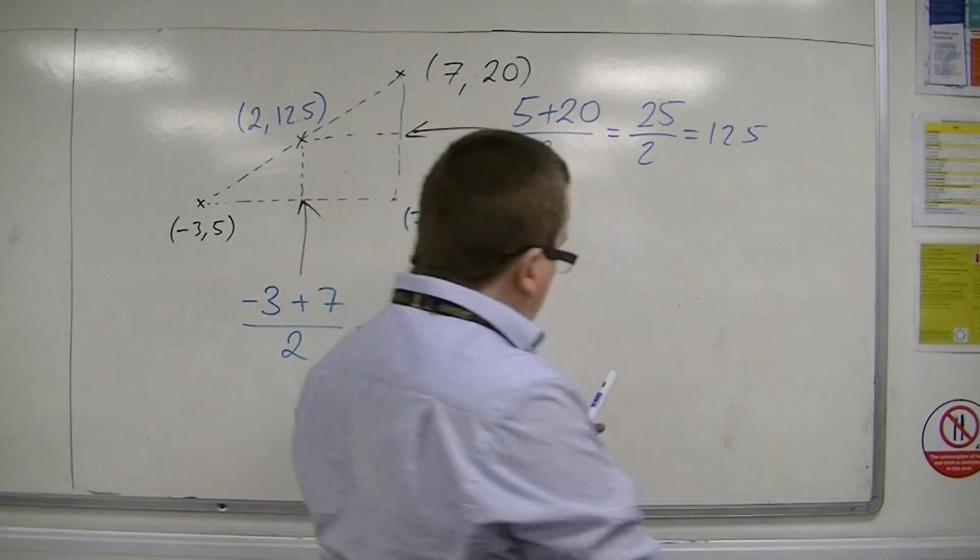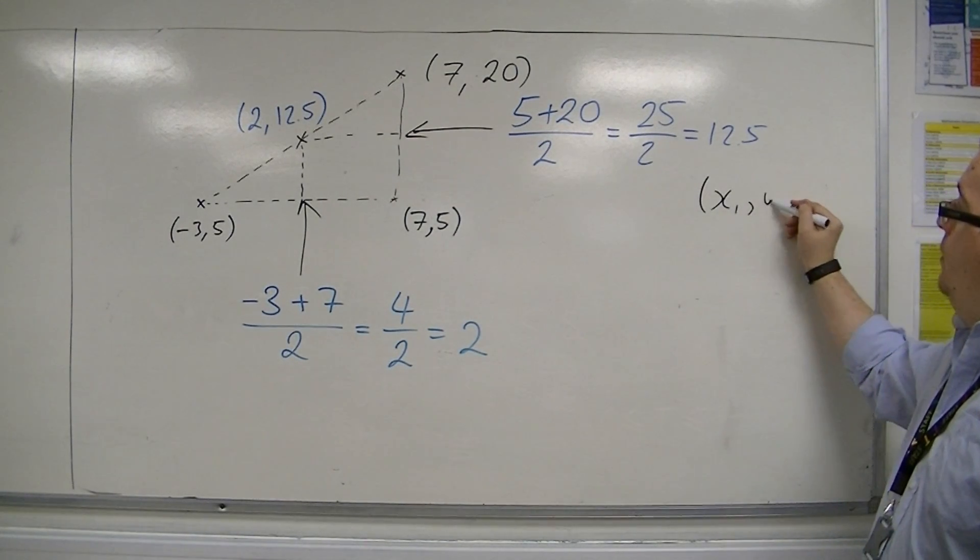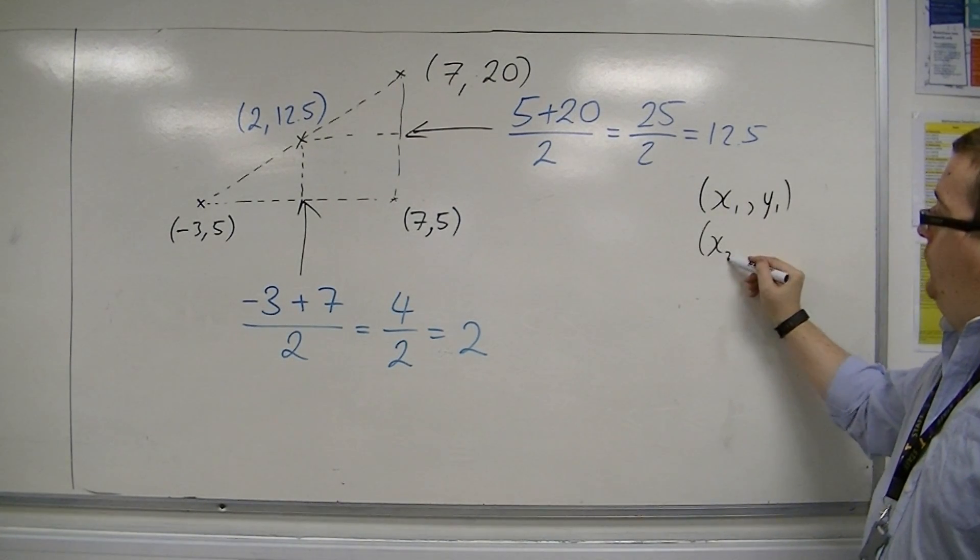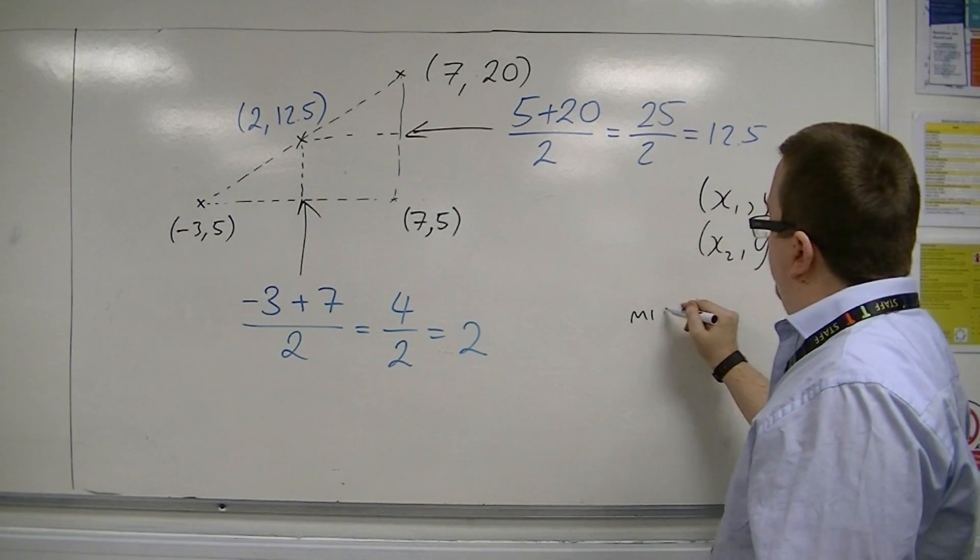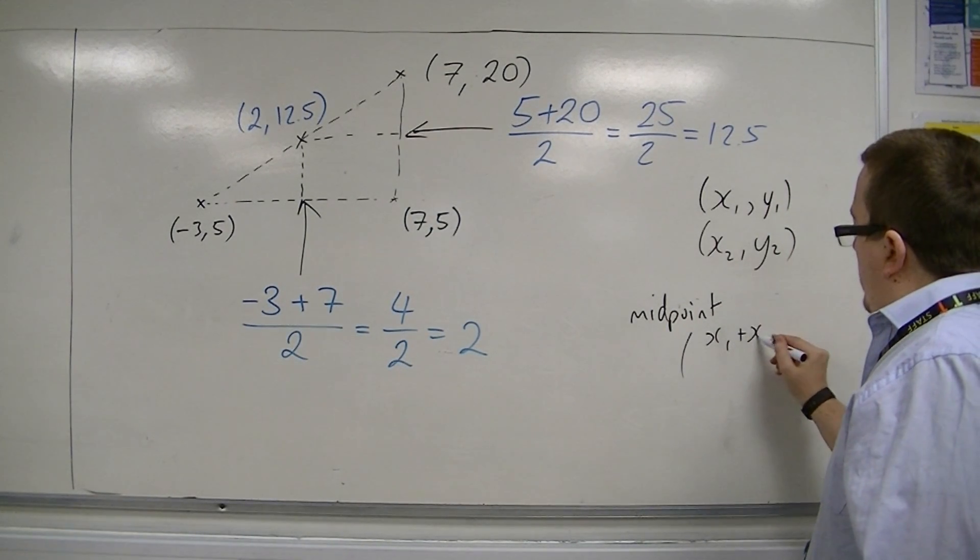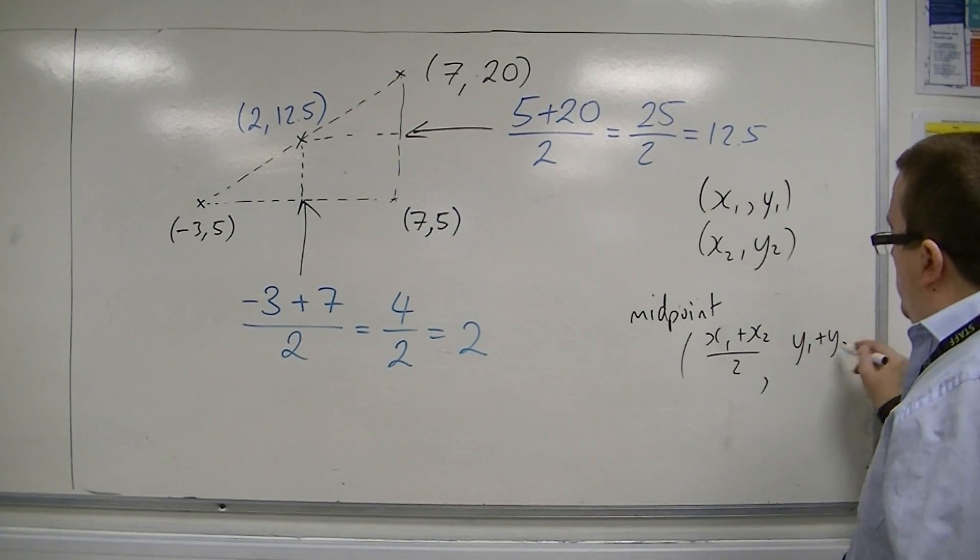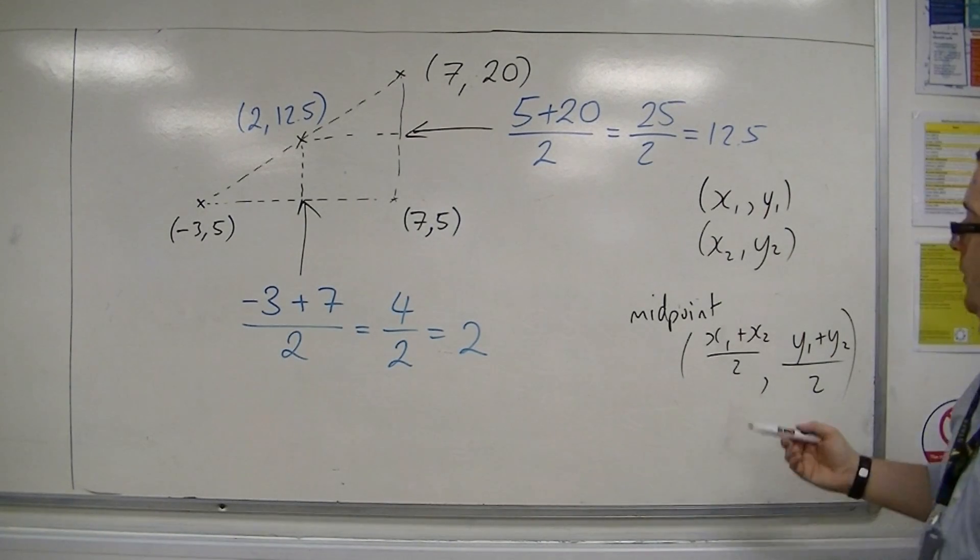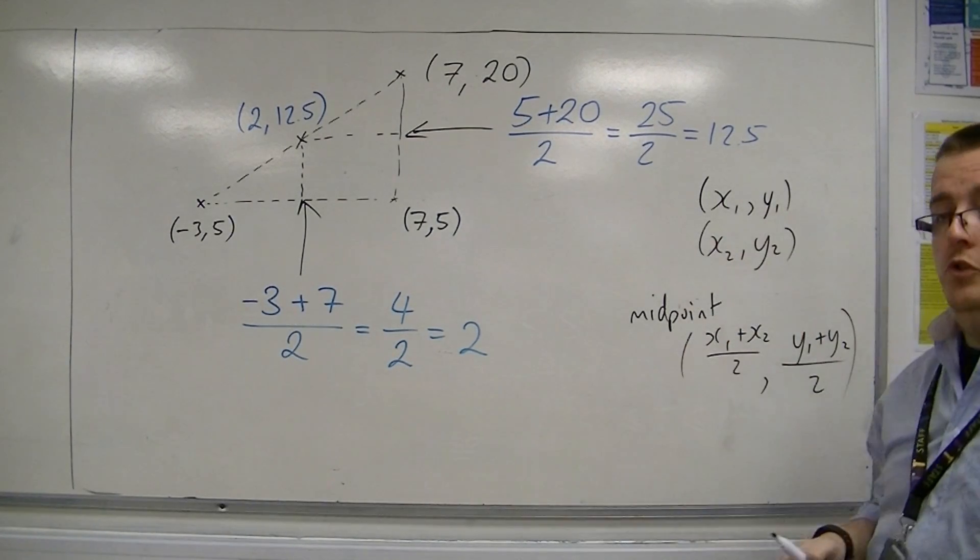So in general, what we're saying is that we've got two coordinates, x1, y1, and x2, y2, then the midpoint is x1 plus x2 over 2, comma, y1 plus y2 over 2. So this is the general form for finding the midpoint between two coordinates. It's useful to memorize that.